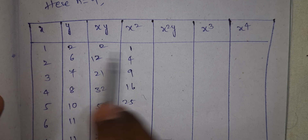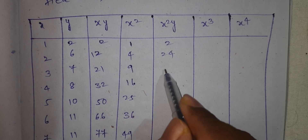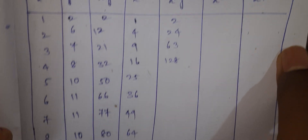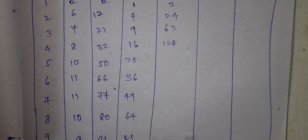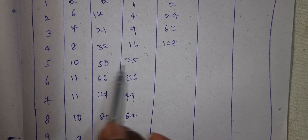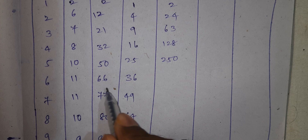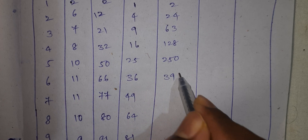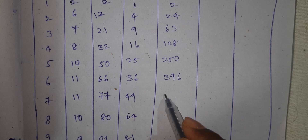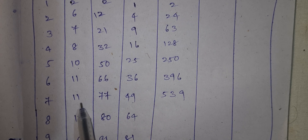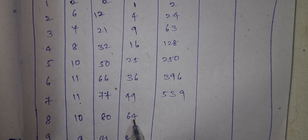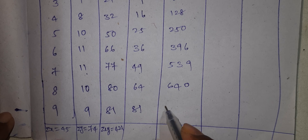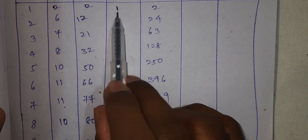Next, x squared times y: 1 times 1, 2 squared times 2 is 4 giving 8, 4 giving 24, 9 giving 63, 16 times 8 is 128, and so on. Summation x squared y equals 2519. Summation x squared equals 285.